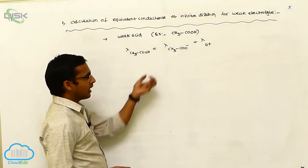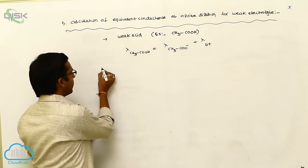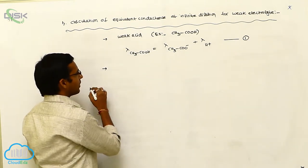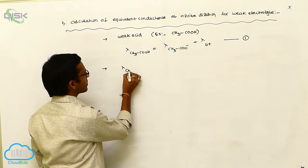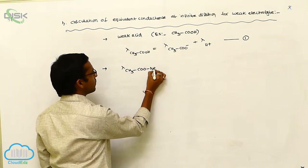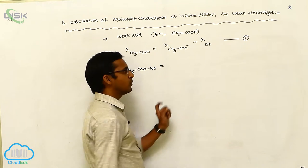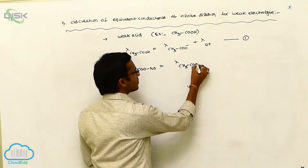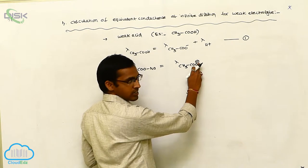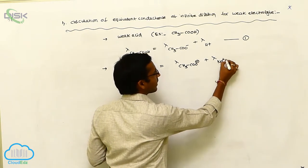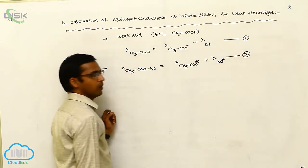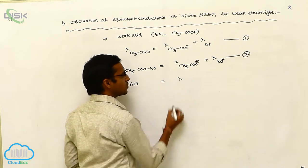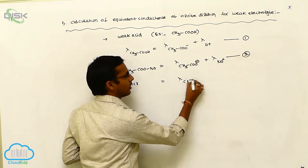This equivalent conductance is calculated by considering two strong electrolytes. The first strong electrolyte is sodium acetate, CH3COONa, which undergoes dissociation to produce the acetate anion CH3COO minus and the sodium cation Na plus — this is equation 2. The second strong electrolyte is HCl, a strong acid, which also gives two types of ions: H plus cation and Cl minus anion — this is equation 3.